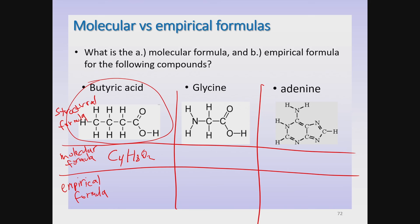Now let's figure out the empirical formula for butyric acid. The question is: can we reduce four carbons, eight hydrogens, and two oxygens to a simpler whole number ratio? We can divide each of those numbers by two: C4 divided by 2 is 2, H8 divided by 2 is 4, and O2 divided by 2 is 1. Since we never write a subscript of one, the empirical formula for butyric acid is C2H4O.